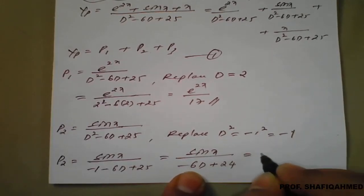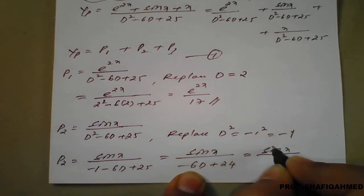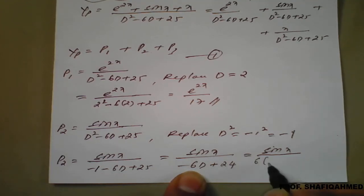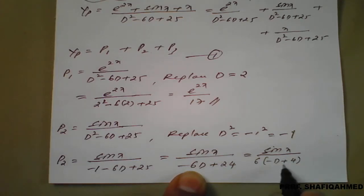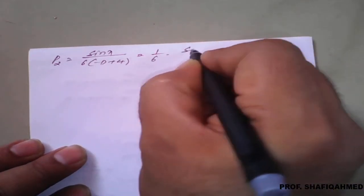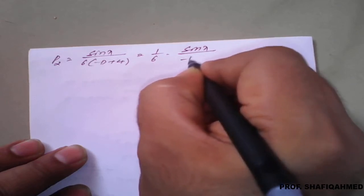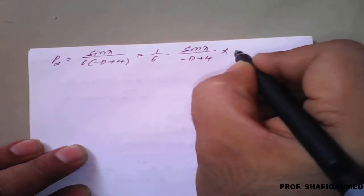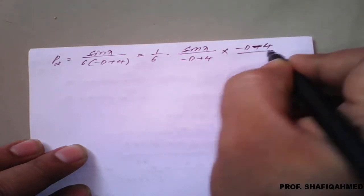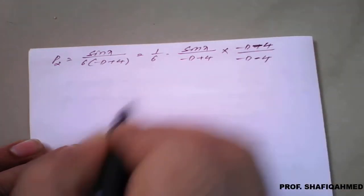Minus 1 plus 25 is plus 24, so P2 becomes sin x divided by 24 minus 6d. Taking 6 as common factor, we get sin x divided by 6 times (minus d plus 4). We keep 1 upon 6 outside and rationalize sin x divided by (minus d plus 4) with its conjugate (minus d minus 4) divided by (minus d minus 4).